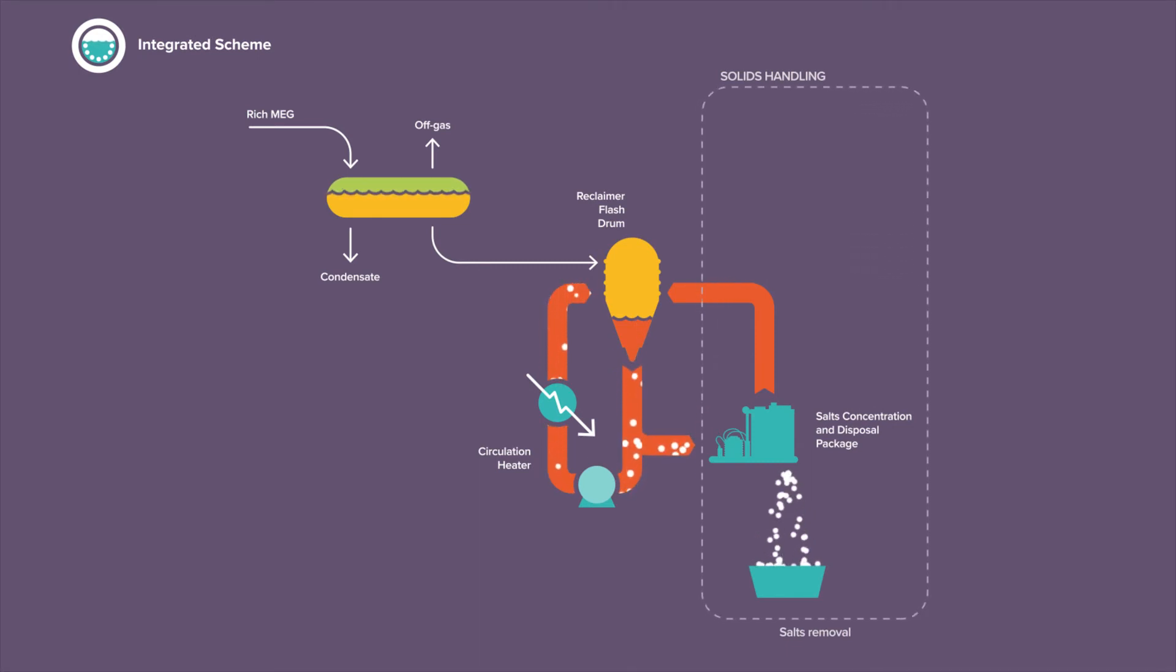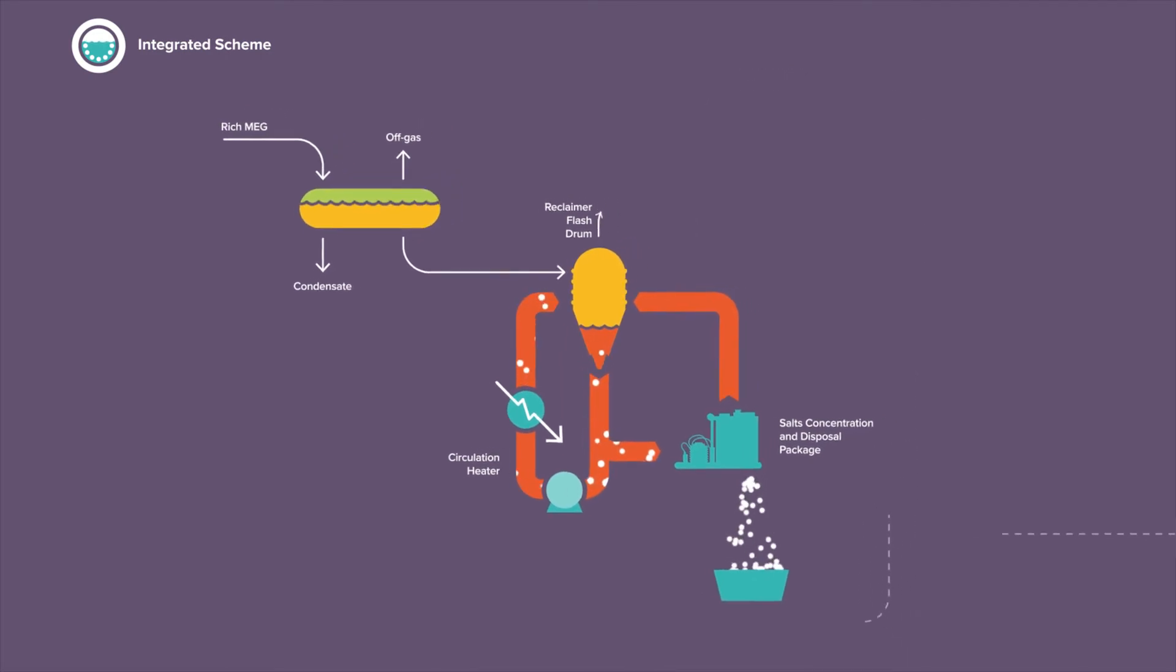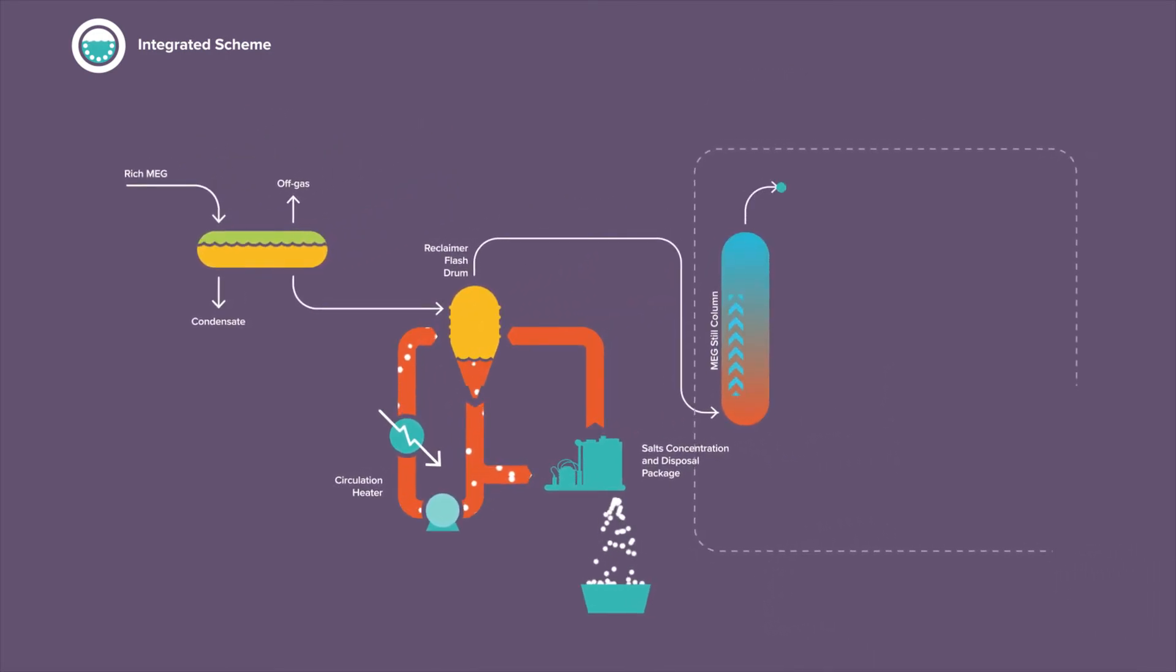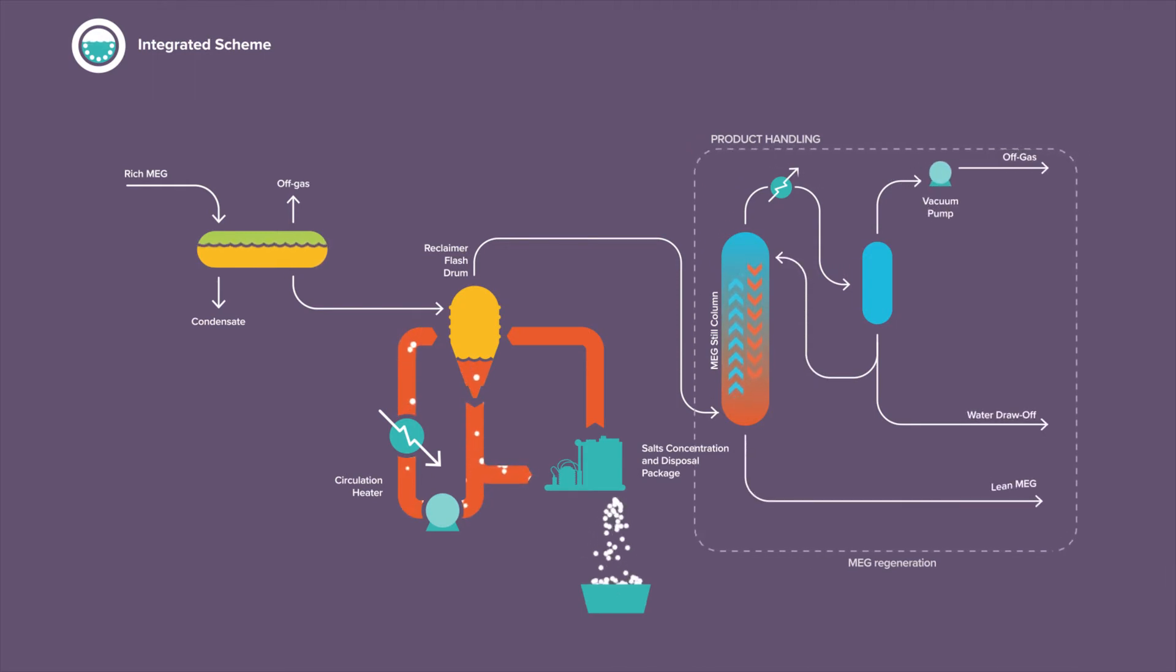MEG and water vaporized in the reclaiming section are free of salts, and are sent to the fourth section, called product handling, where the lean MEG is recovered in a vacuum fractionation tower. At the outlet, lean MEG is free of salts and at a concentration suitable for reinjection in the flowline.